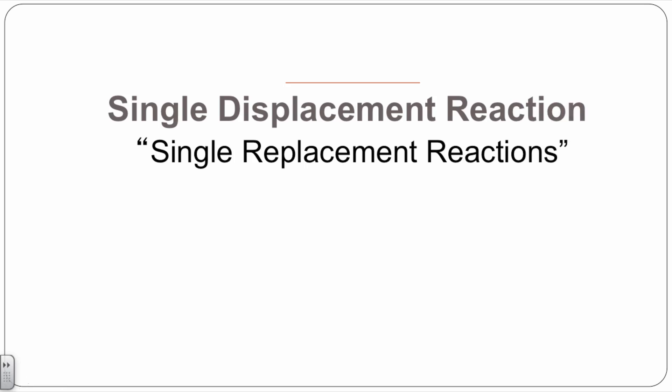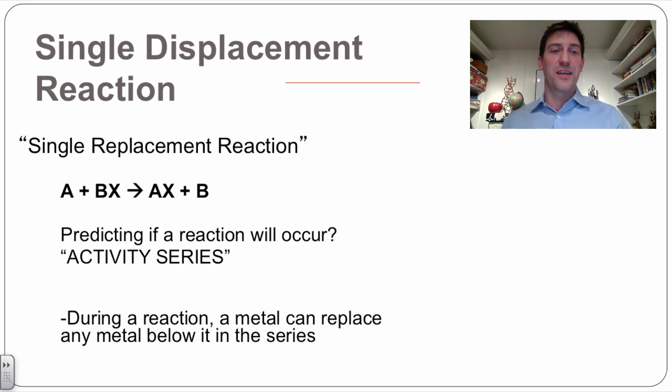Then we've got single displacement reactions, which are also called single replacement reactions. And that's where we end up with a little do-si-do, where we end up with this lone A coming over here and breaking off the B, and then the B going and living by itself. You can see the products of that over here.